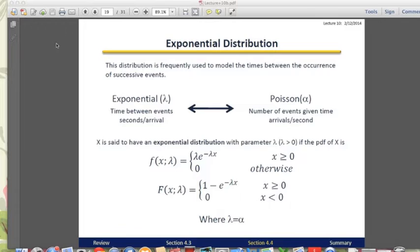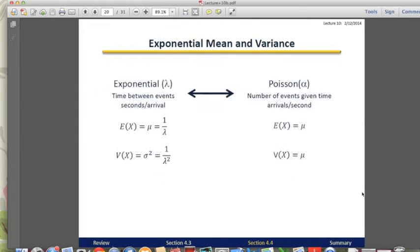And the exponential distribution has a single parameter called lambda, which has the units seconds per arrival. And here is the formula for the PMF and the CDF. And the expected value of exponential distribution is 1 over lambda, and variance is 1 over lambda squared.